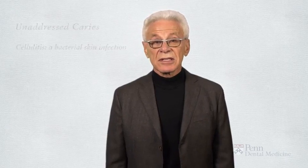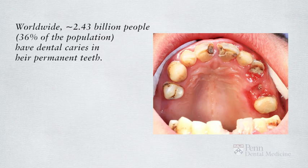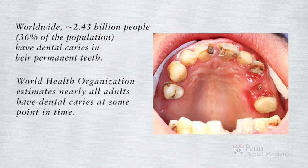To better understand the impact of tooth decay, let us review some of the public health data on caries. Worldwide, close to 2.5 billion people, or at least 36% of the population, have dental caries in their permanent teeth. According to the World Health Organization, estimates indicate that nearly all adults have dental caries at some point in time.